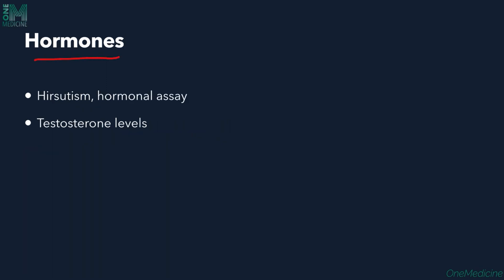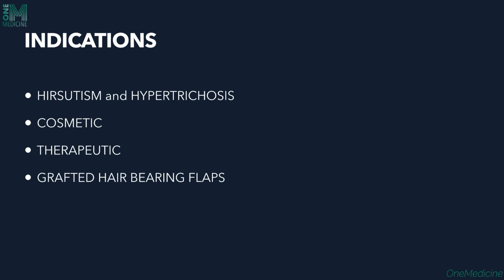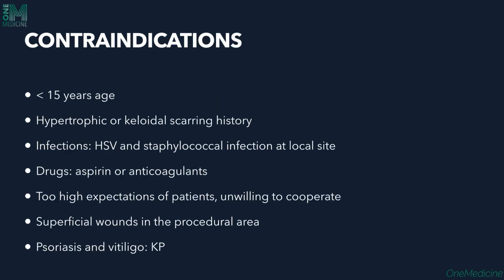Hormones: if the patient has any hormonal issues like hypertrichosis, hormonal assays need to be done and treated along with laser hair removal. Testosterone levels need to be checked and treated accordingly. Regarding site of hair removal, axilla and bikini areas respond better than arms and chest. Indications for laser hair removal include hypertrichosis and hypotrichosis, for cosmetic and therapeutic purposes, and for grafted hair-bearing flaps.